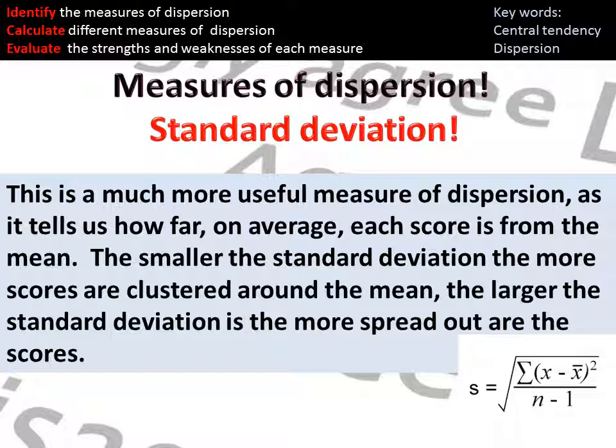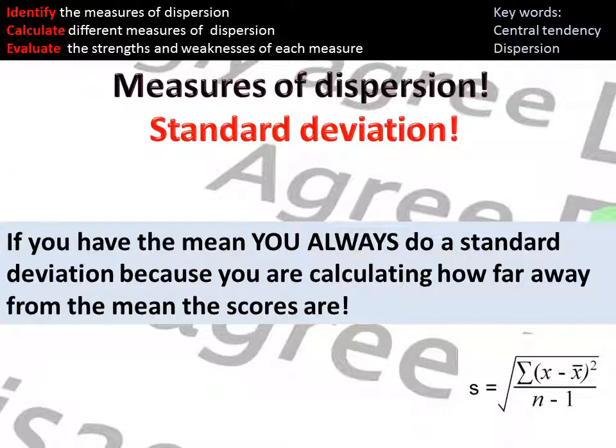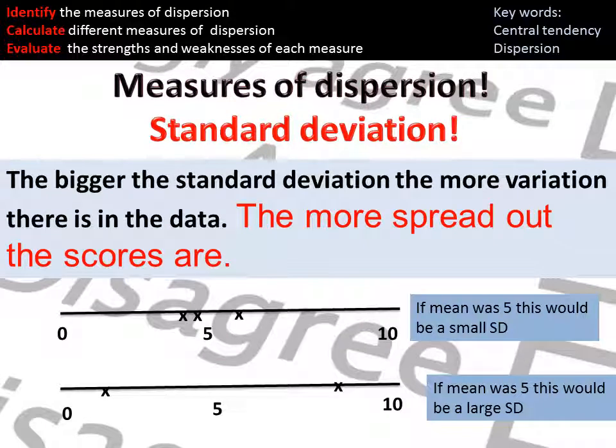Standard deviation is the one that we looked at in real detail in lesson. Standard deviation is a much more useful measure of dispersion, because it will tell me how far each score is away from the mean. The smaller the standard deviation, the more the scores are clustered around the mean. And the larger the standard deviation, the more spread out the scores are. You have to have the mean to do a standard deviation. They're like best pals, remember it that way. Where there is a mean, you will do a standard deviation, because essentially with a standard deviation, you're calculating how far the scores are away from the mean. If you look at the top diagram where the scores are quite closely clustered around the 4, we would expect a small standard deviation on that if the mean value was 4. If you look at the diagram below, the scores are quite spread out away from the value number 5, so if the mean was 5 on that occasion, I would expect a large standard deviation.